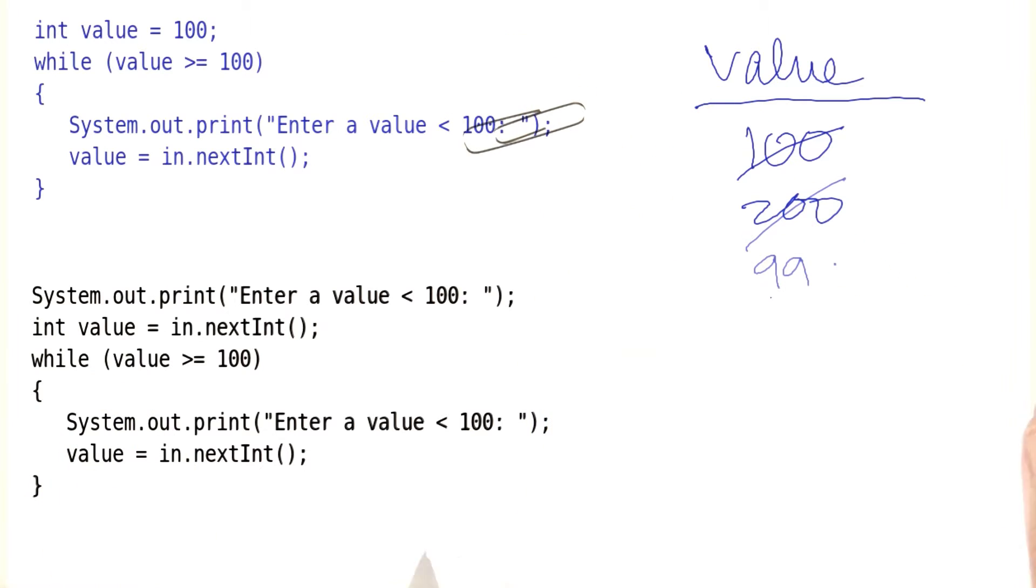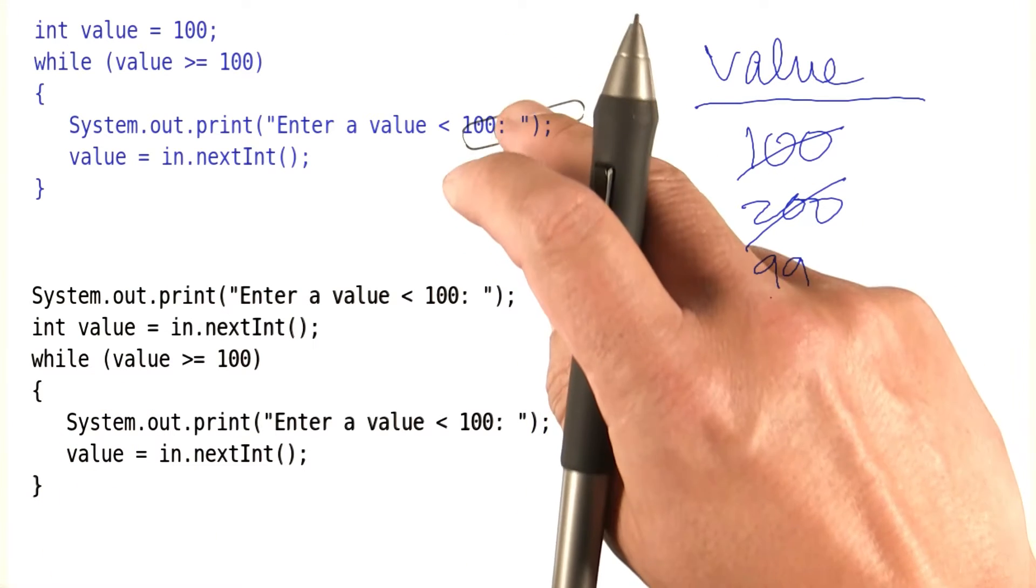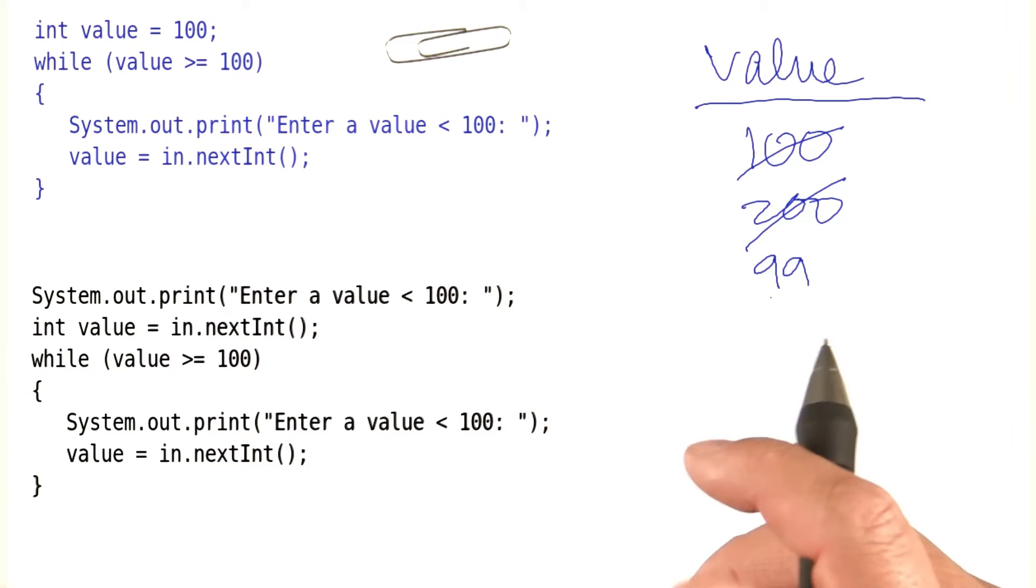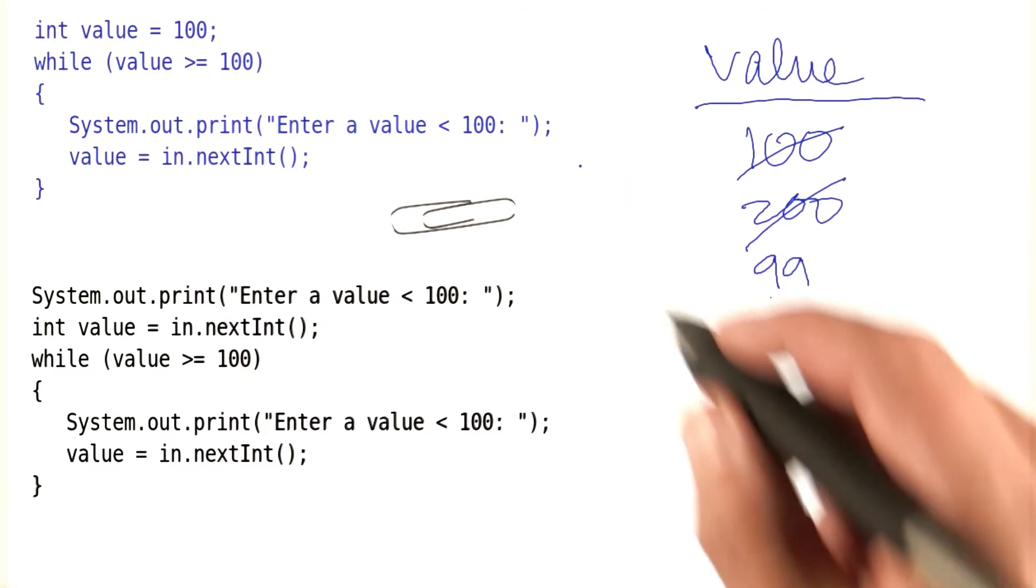So now let's say the user is doing better and enters 99. We go back to the top of the loop. 99 is less than 100, and we fall through. So it worked. This one was a good solution.